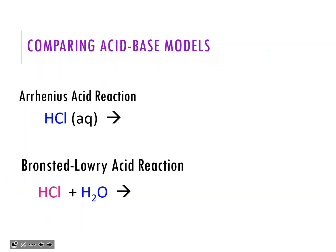Let's compare the models and write out the reactions. For the Arrhenius acid reaction, really all you're doing is showing the dissociation or ionization. You would just split HCl apart into H+ and Cl-. In acid-base terms, they call it ionization, but it is basically dissociation - you're just separating them.